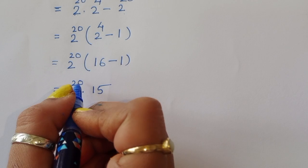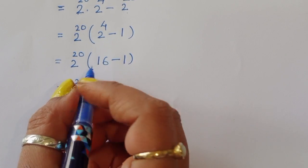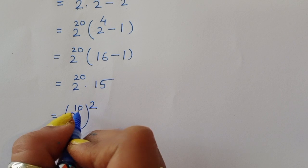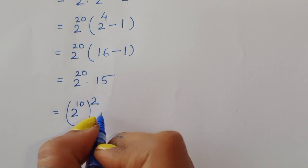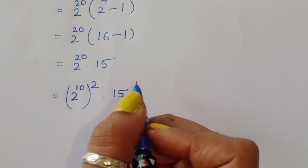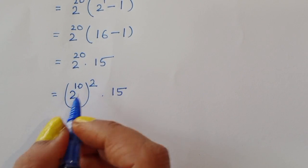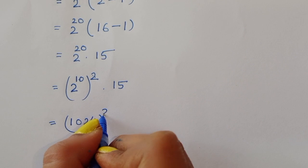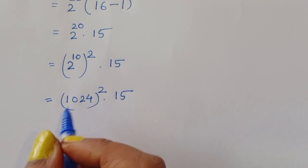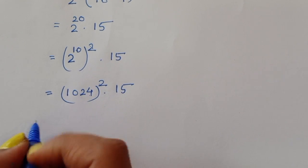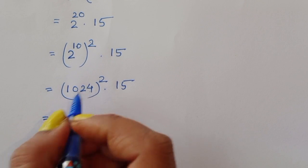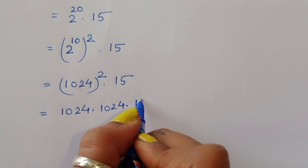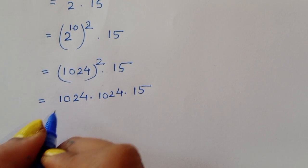Now 2 power 20 can be written as 2 power 10, power 2, so that is 2 power 10 squared, times 15. The value of 2 power 10 is 1024, so we get 1024 squared times 15. We can write 1024 squared as 1024 times 1024 times 15.